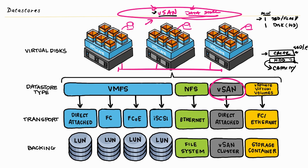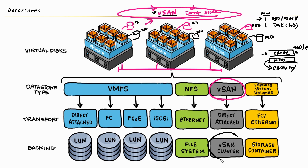So each ESXi host that is participating and contributing to the vSAN store is going to have one SSD drive and at least one other drive, which also could be SSD or a more traditional spinning disk. That would repeat across all hosts — each needs a hard drive for storage and an SSD drive for caching. The vSAN feature is actually enabled at the cluster level, and then the ESXi hosts in that cluster who are participating have the actual drives and resources that are going to be making up the virtual storage area network.